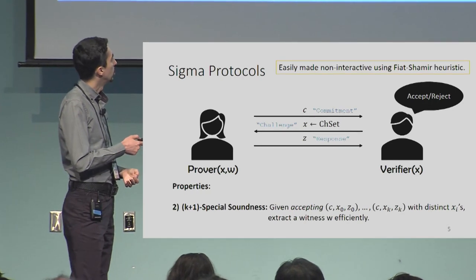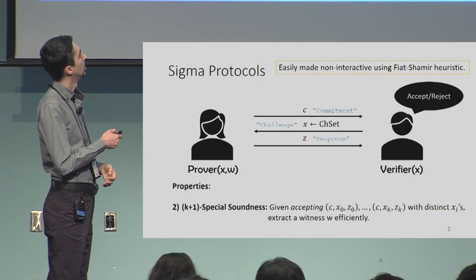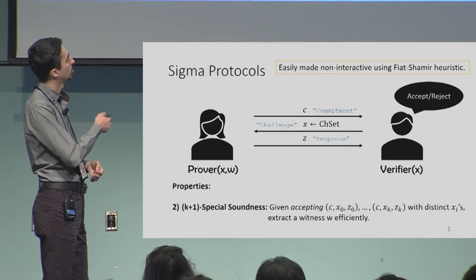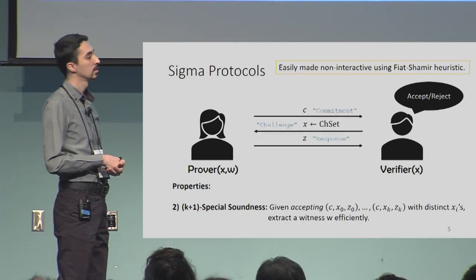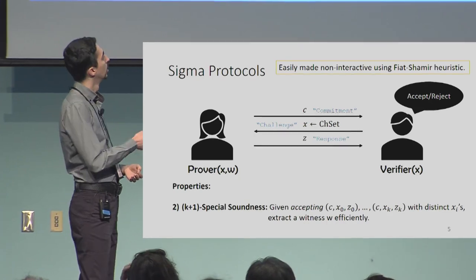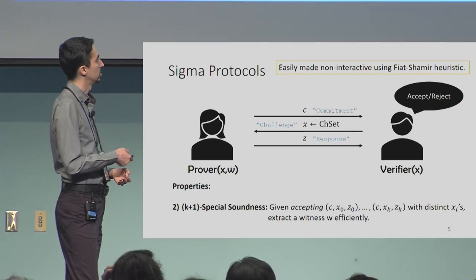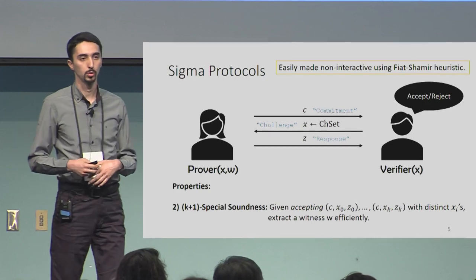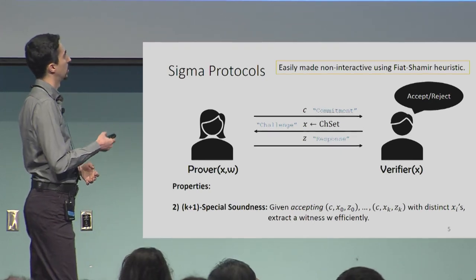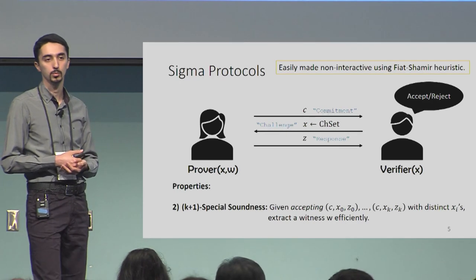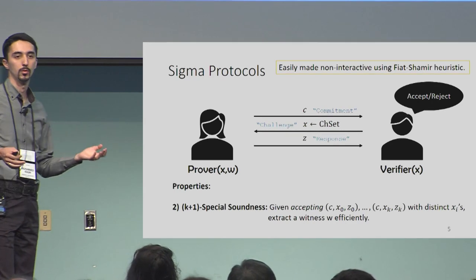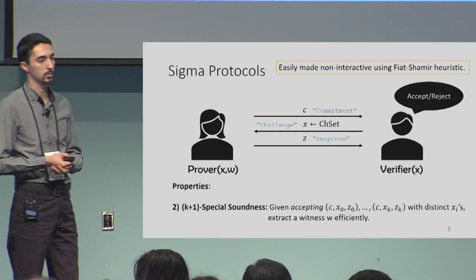This means we give some algorithm these accepting protocol transcripts — commitment C, challenge x, and response z — where the C's are common for all these sets and the x_i's (challenges) are different. We want to efficiently extract a witness w that satisfies the relation the prover is trying to prove. If we can do this, we say the protocol is k-plus-one special sound.